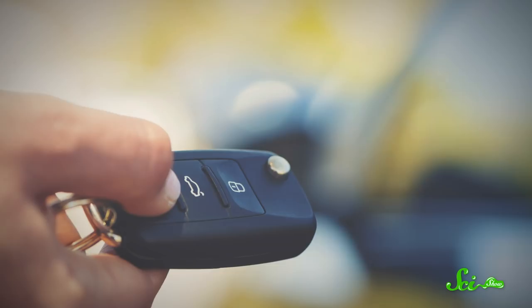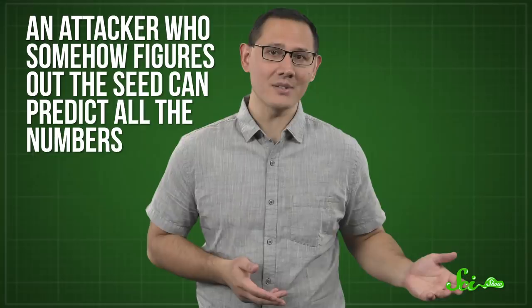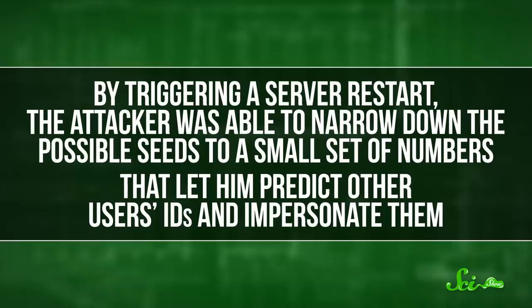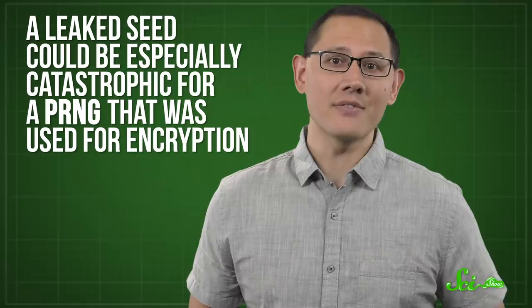Sometimes, though, PRNGs aren't enough. Even if the algorithm is flawless, an attacker who somehow figures out the seed can predict all of the numbers. Ironically, the website Hacker News once became a poster child for this problem. Back in 2009, a security researcher realized that the site's random number generator, which assigned IDs to logged-in users, was seeded with the time when the server started up. By triggering a server restart, the attacker was able to narrow down the possible seeds to a small set of numbers. That let him predict other users' IDs and impersonate them. A similar problem a decade earlier allowed another team of researchers to cheat at online poker. A leaked seed could be especially catastrophic for a PRNG that was used for encryption. If an attacker uncovered the seed, they could guess the encryption keys and go back and decrypt all the previous messages.